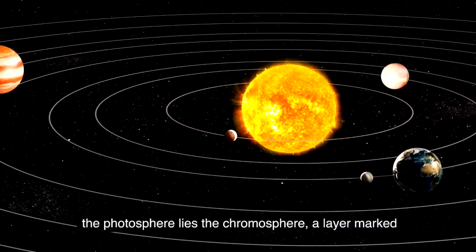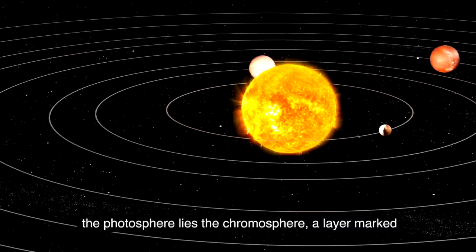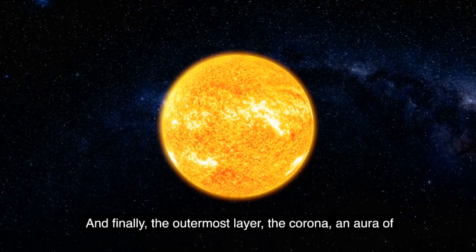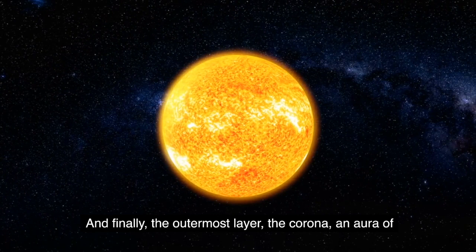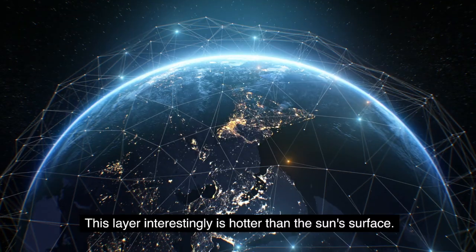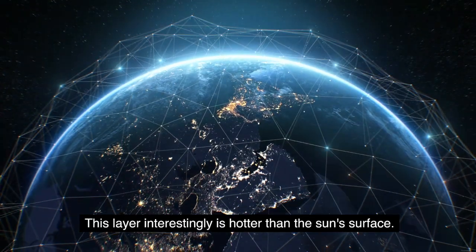Above the photosphere lies the chromosphere, a layer marked by violent eruptions of gas known as solar flares. And finally the outermost layer the corona, an aura of plasma that's visible during a total solar eclipse. This layer, interestingly, is hotter than the sun's surface.